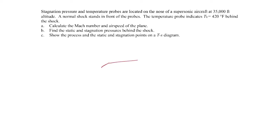So we've got our aircraft here, and there's a stagnation pressure and temperature probe out in front of the aircraft, and there's a normal shock wave in front of it. So the flow is coming in this way, and then eventually makes its way to the temperature and pressure probes.